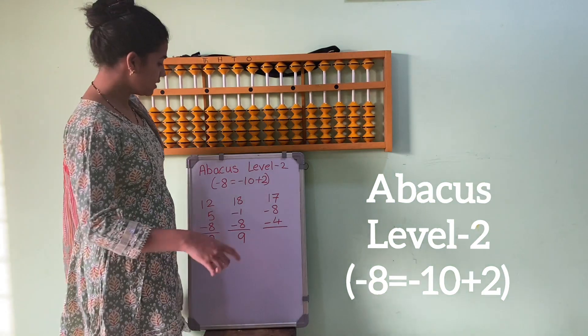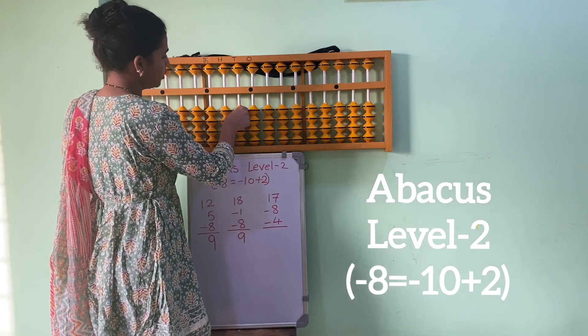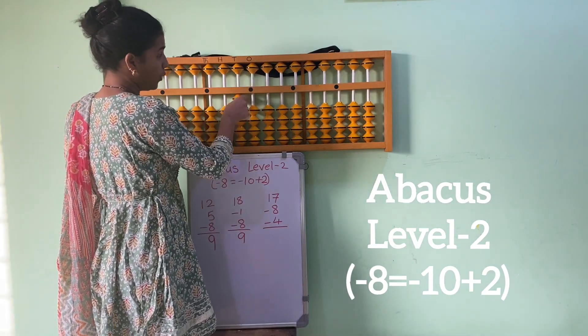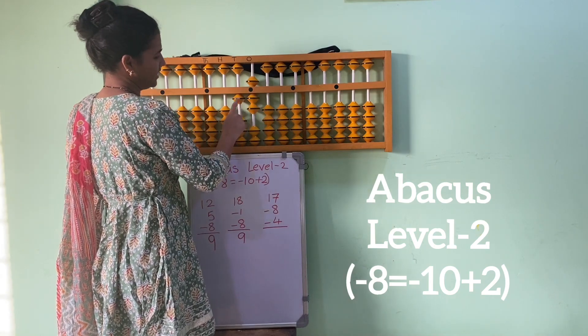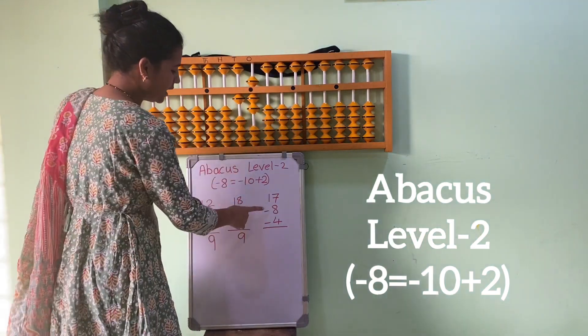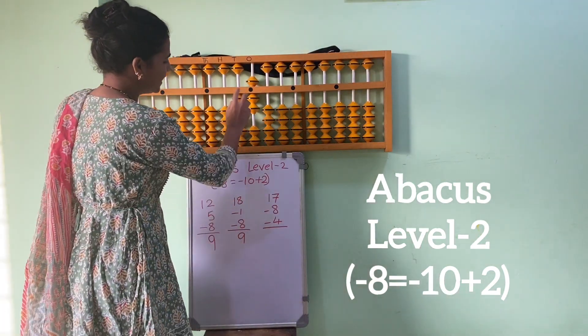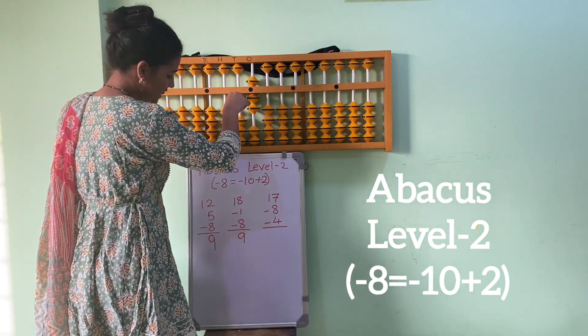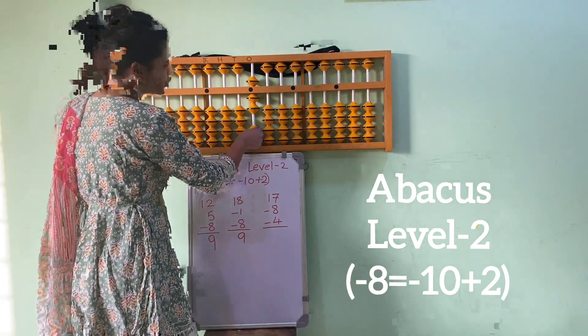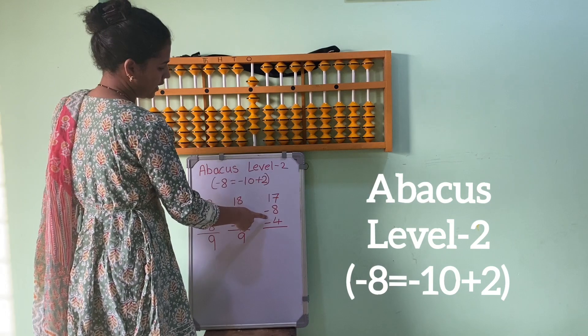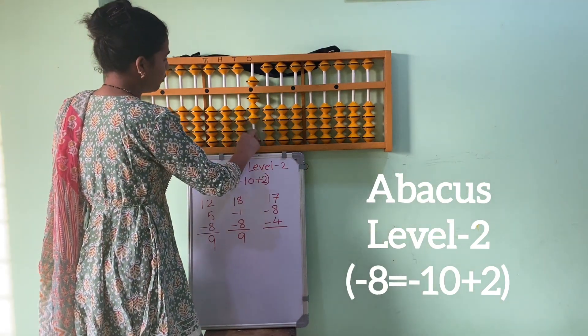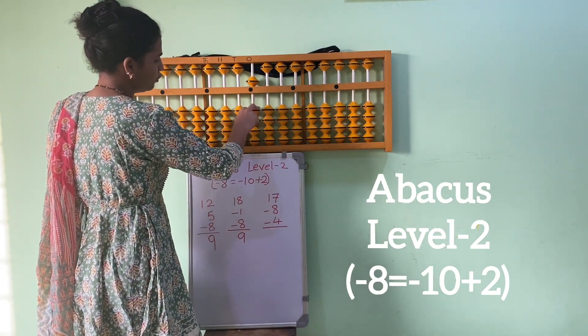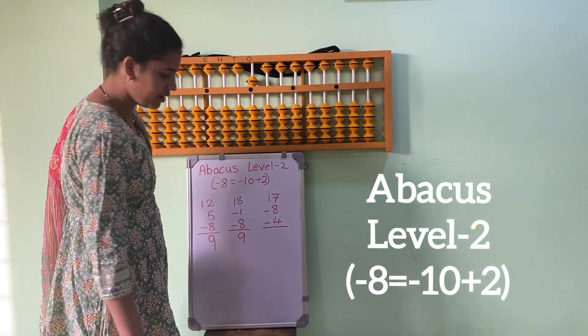Let's see another sum: 17. 1, 5, 6, 7. 1, 7, 7. Minus 8. Minus 8 ke liye kya formula use karenge humara? Minus 10 plus 2. 1, 2. Minus 4. 1, 2, 3, 4. Kya hai humara? 5.